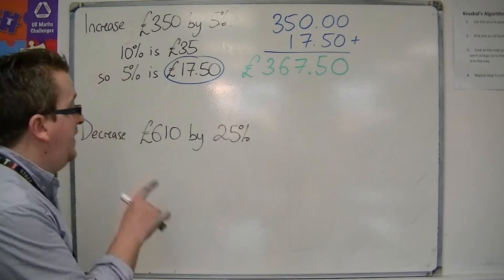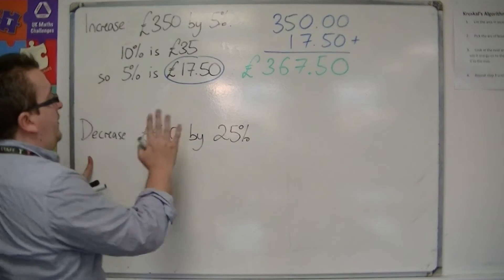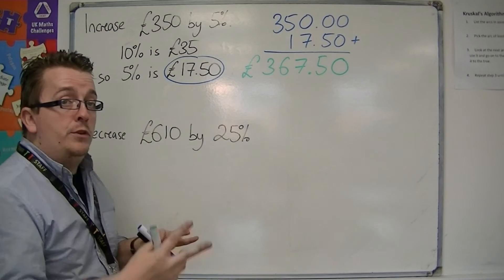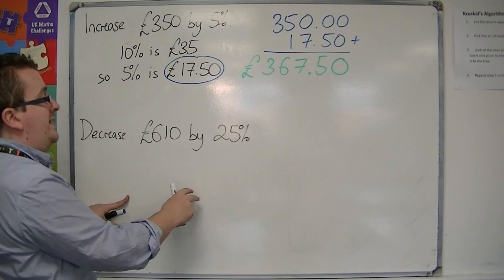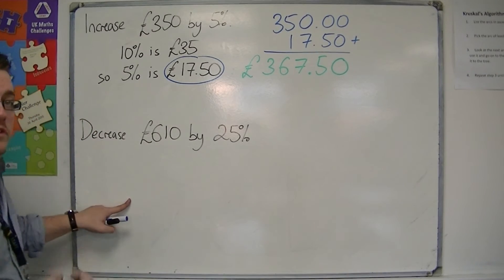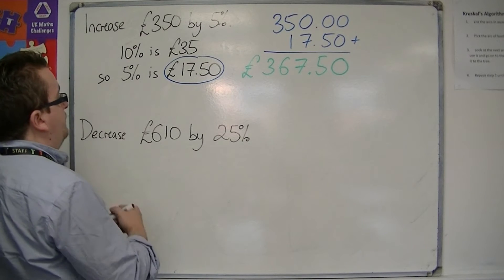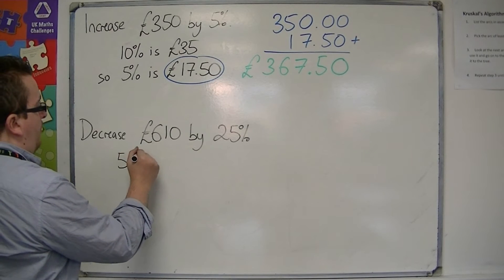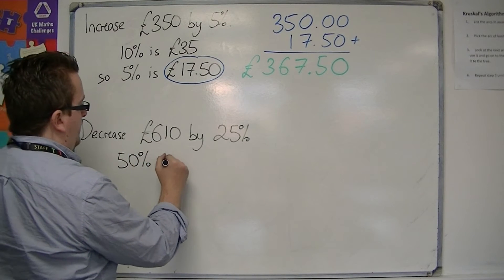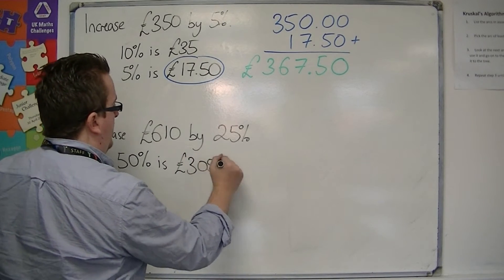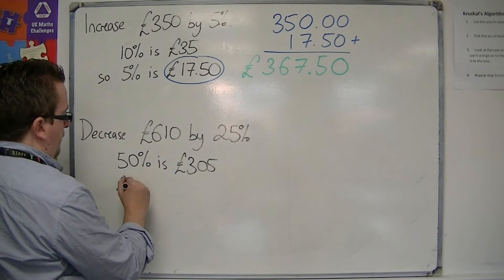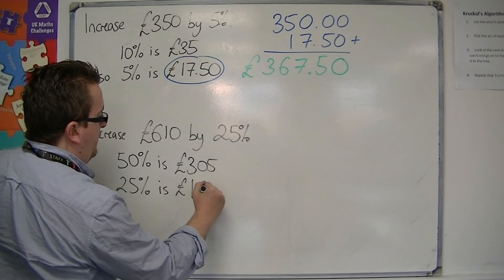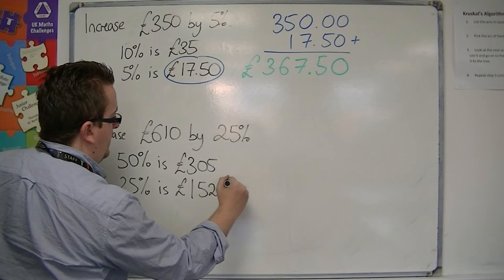In the second example I'm going to do a decrease. So we're decreasing £610 by 25%. We're going to calculate 25% and subtract that from the original £610. In order to work out 25%, I'm going to work out what 50% is, which is £305. So half of that is 25%, which is £152.50.